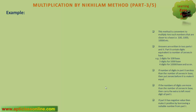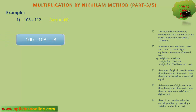Let's begin with our first example: the multiplication of 108 by 112. Obviously, the base will be 100, as both numbers are closer to 100. But what we see here is that these numbers are more than 100. Anyways, the method of calculation will remain the same. So first of all, we will find the difference between the base and the numbers. The difference between 100 and 108 is minus 8, and the difference between 100 and 112 is minus 12.